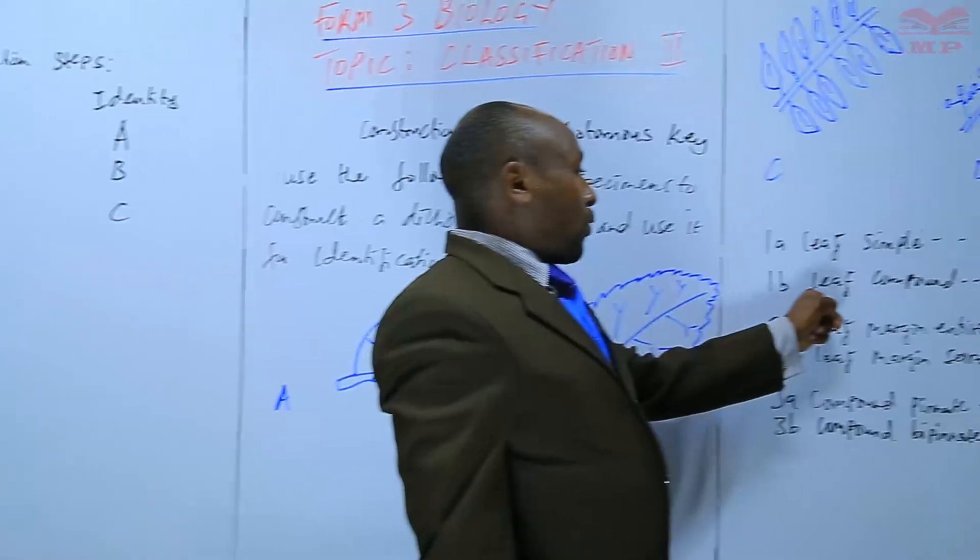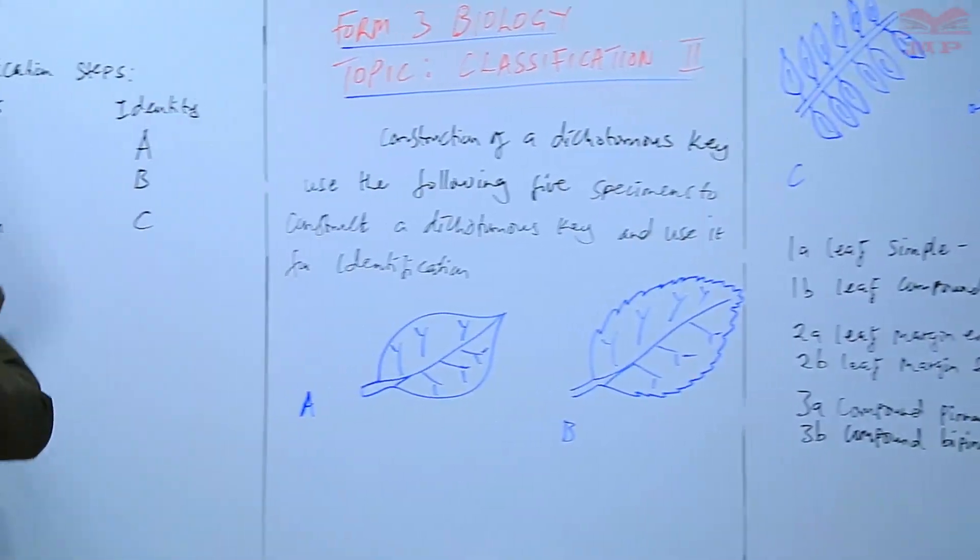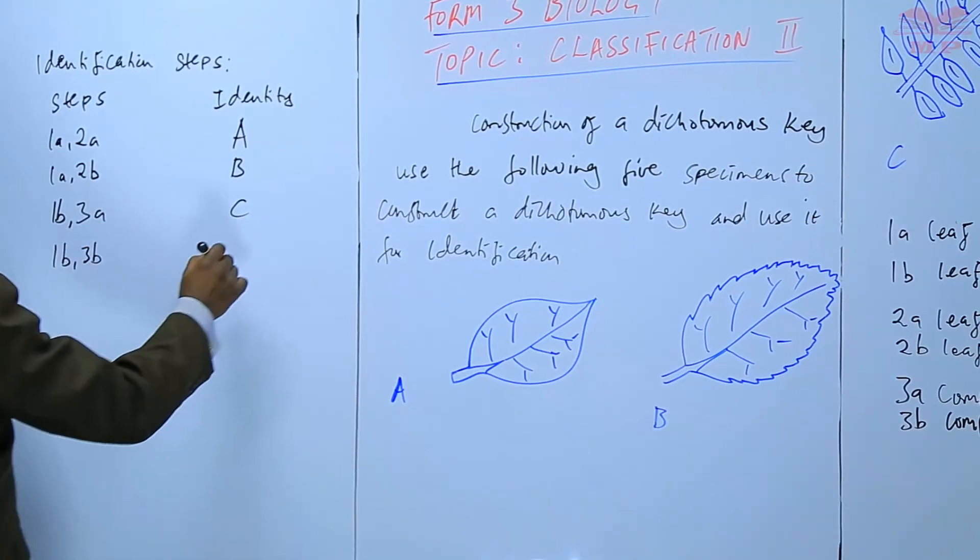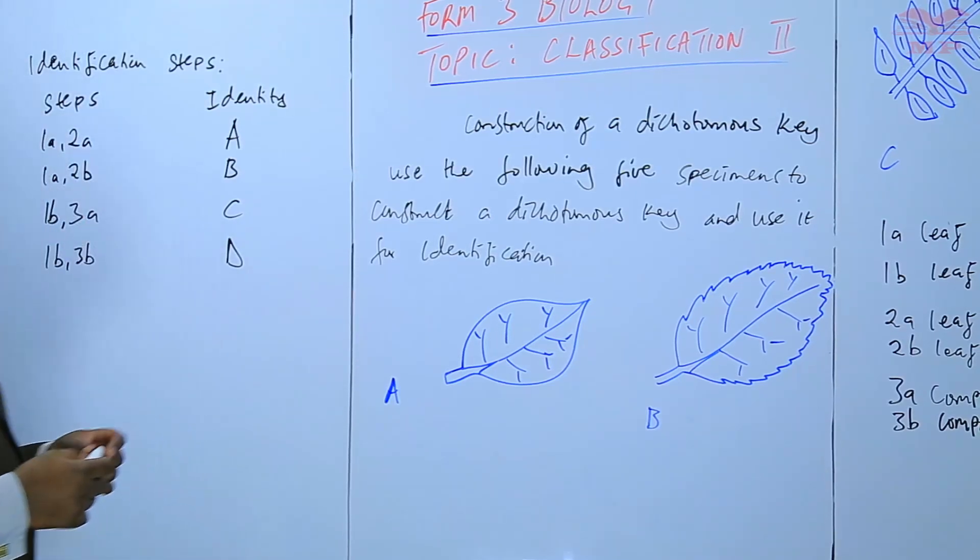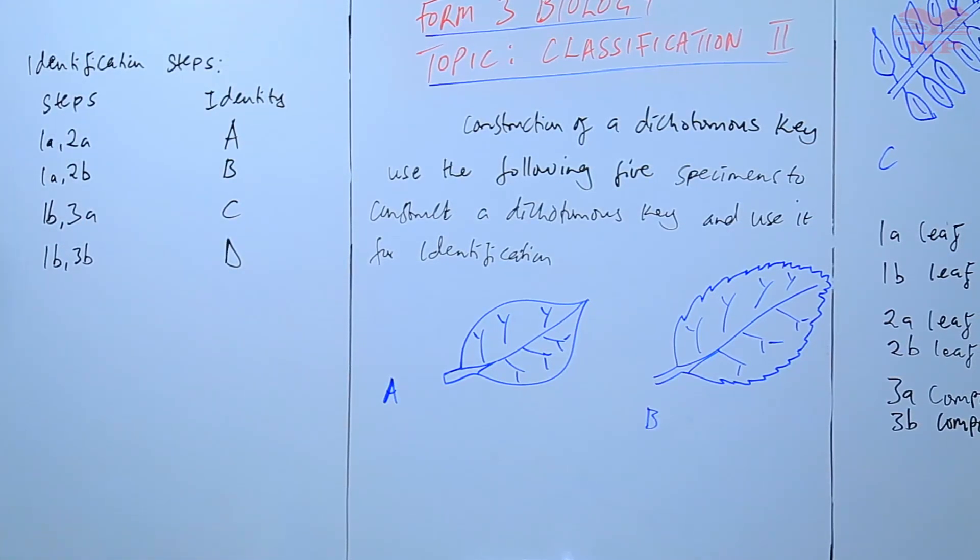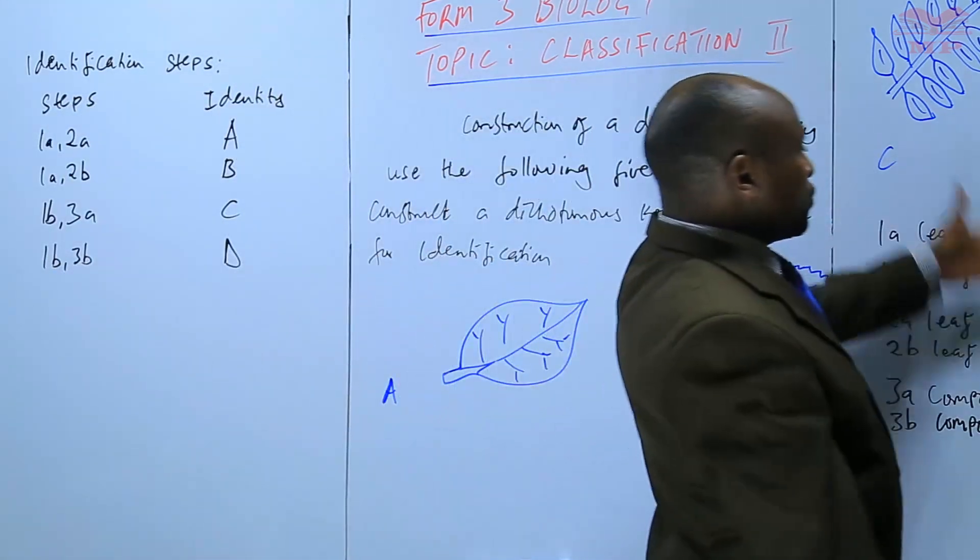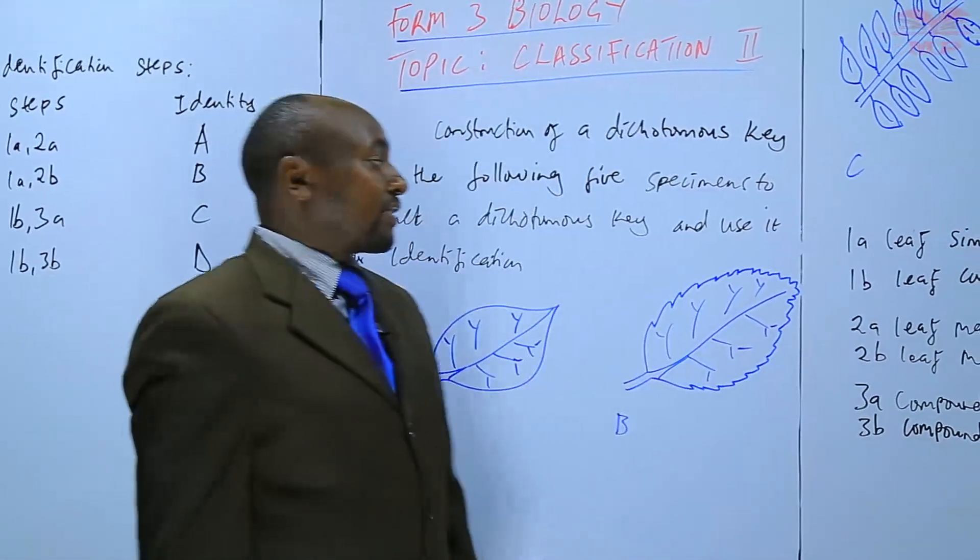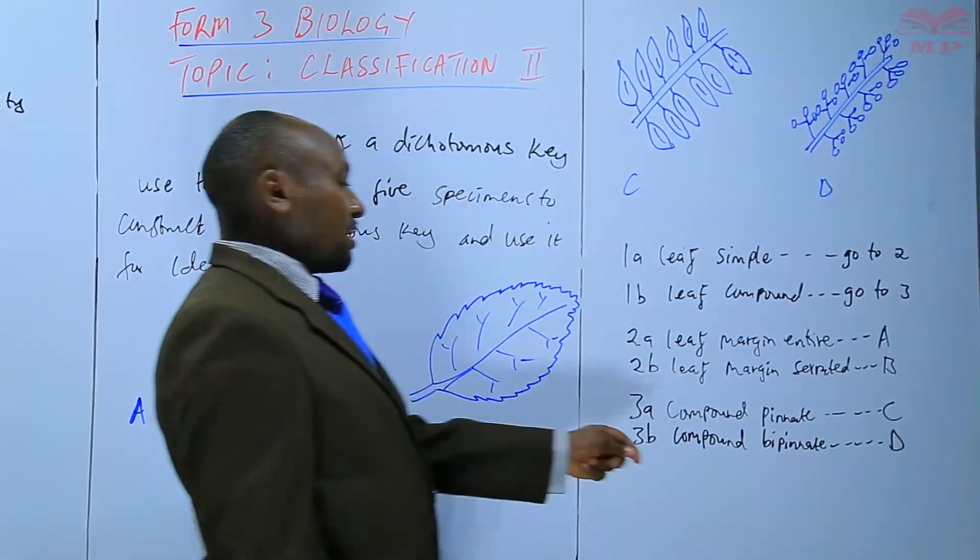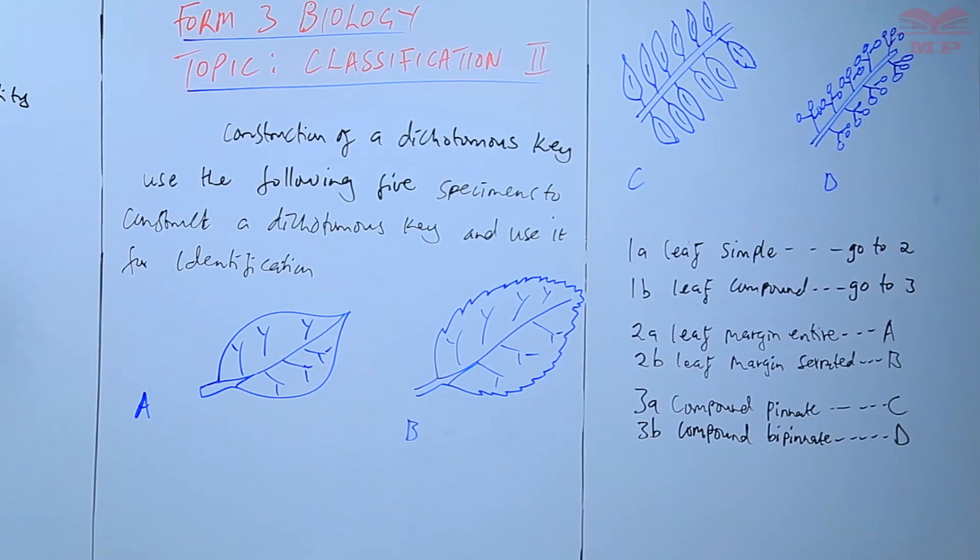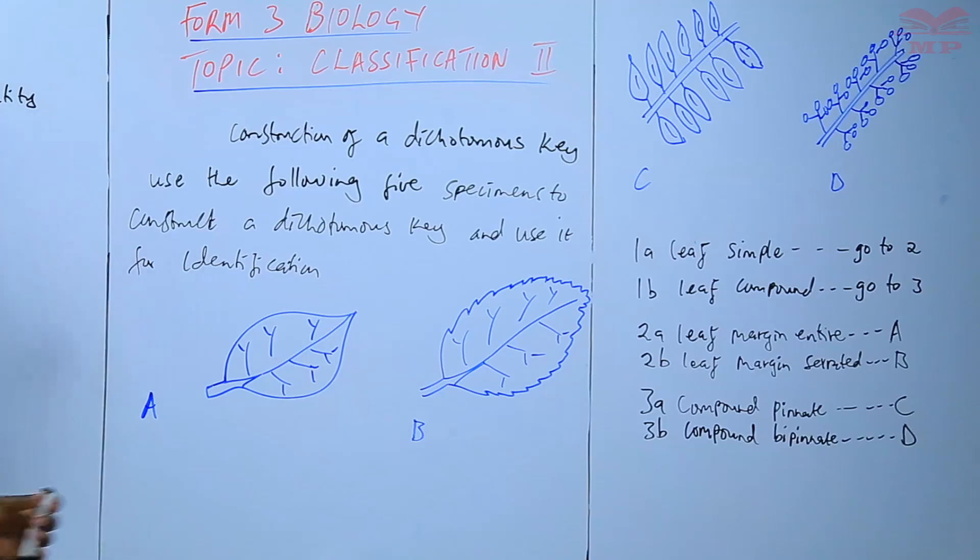Then we go to the next and the final step, that is D, 1B compound, 3B. And this ends up at D. That's an identification that we have carried out for the four specimens. We started with the type of the leaf, then we go to the type of margin, and then finally we discuss the compound, the compound pinnate, and the compound bipinnate.